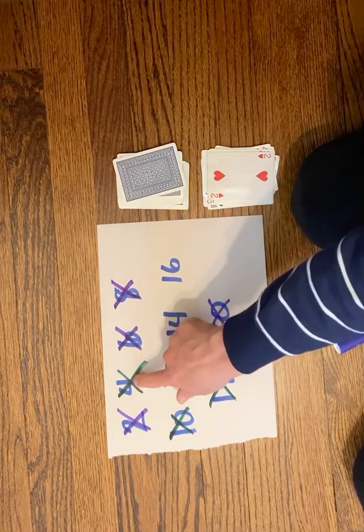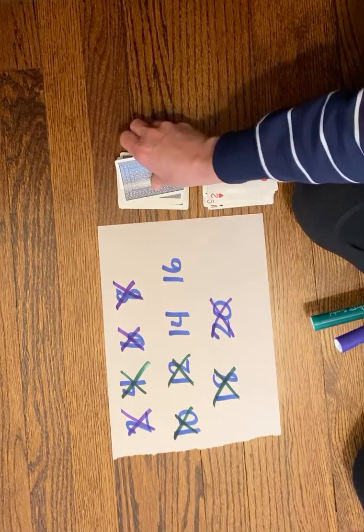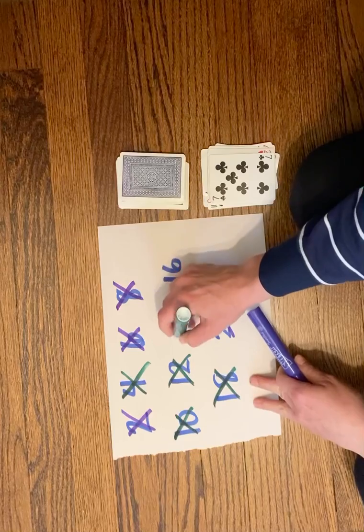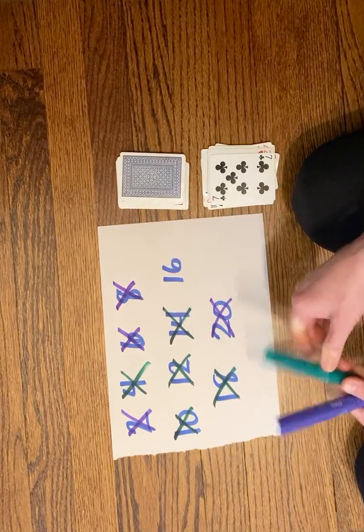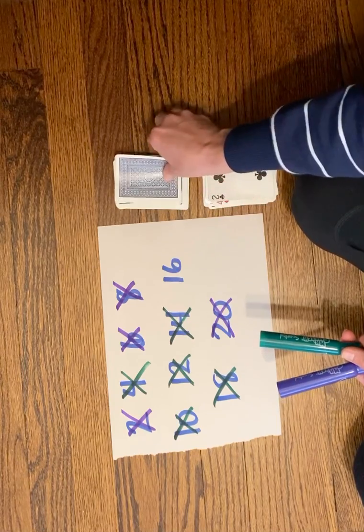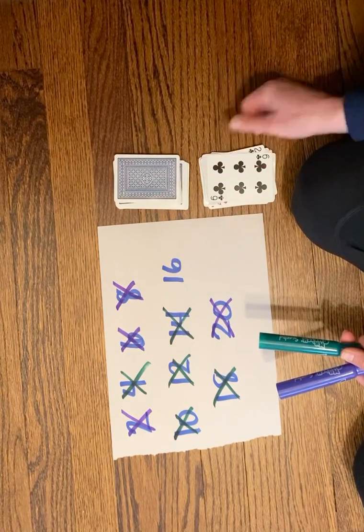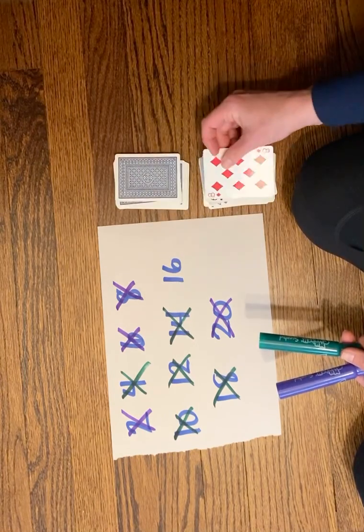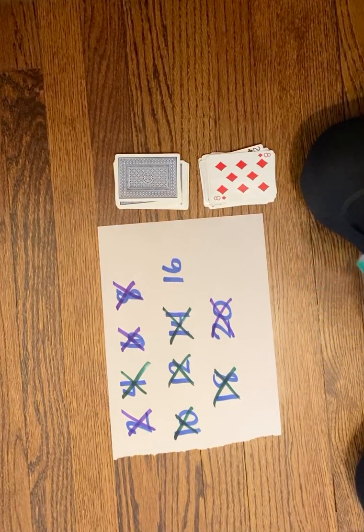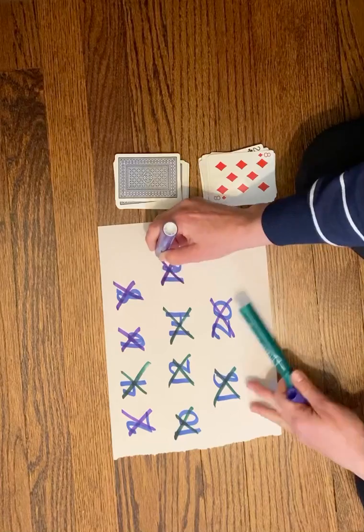Two, already taken, so purple loses a turn. Green gets seven. Seven times two is fourteen, so green gets to take it. Purple loses a turn. Green loses a turn. Purple got eight times two, which is sixteen, so purple gets to take the sixteen.